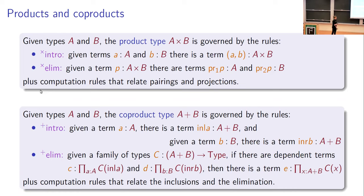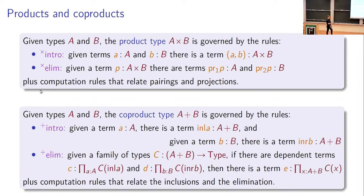There's an elimination rule that projects out from a term of a product type the terms of the constituent types. And then there's a relationship between these introduction and elimination rules in the form of computation rules — another layer of type theory that is very important, particularly to computer scientists. The co-product type is similarly analogous to the disjunction operation.